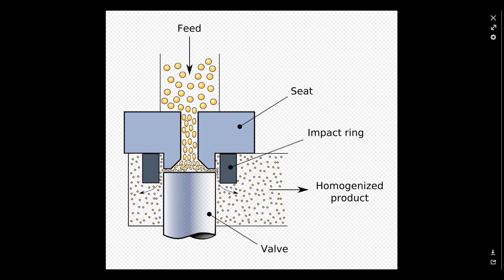These walls are usually under huge pressure. But why is this process important? As you see in this picture, there are key components: this part is called the seat, this part is called the impact ring, and this part is called the valve.